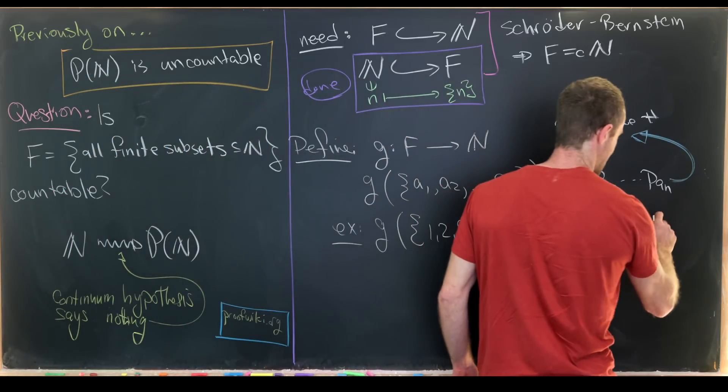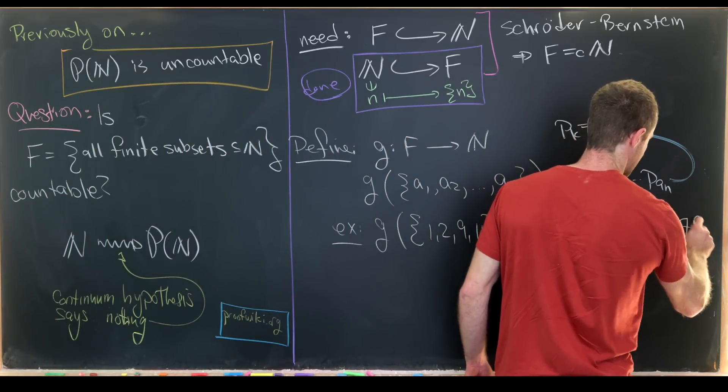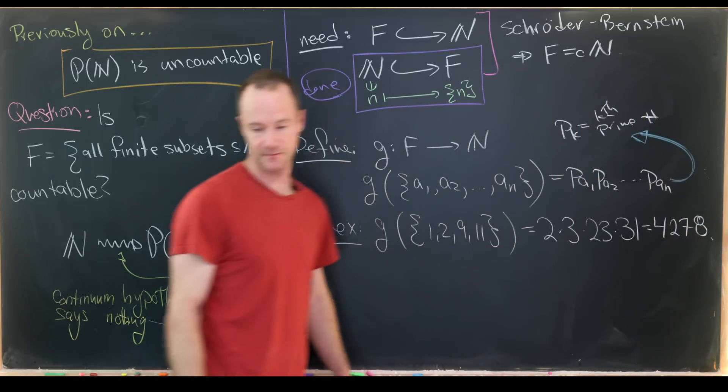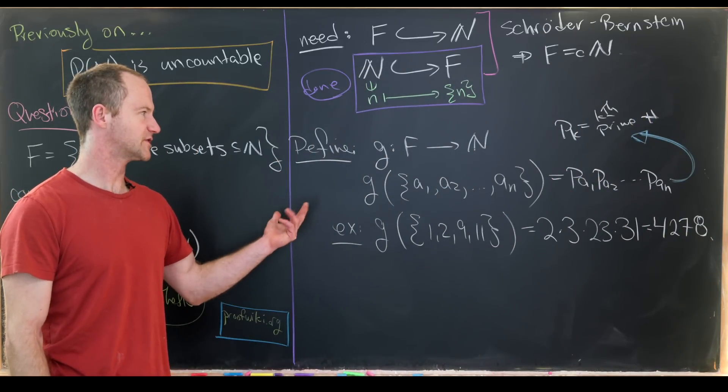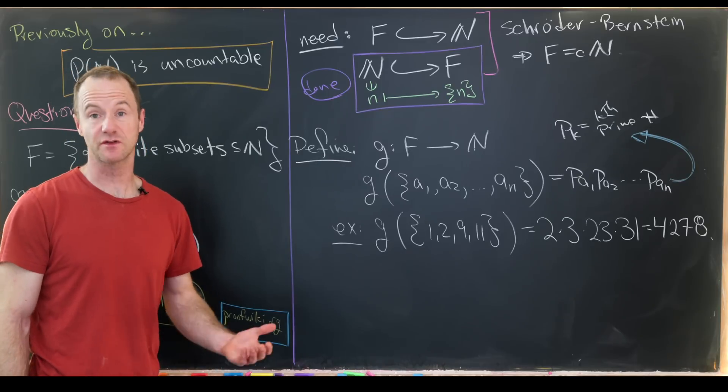So it gets mapped to 4,278. And now our goal will be to show that this function is one-to-one.